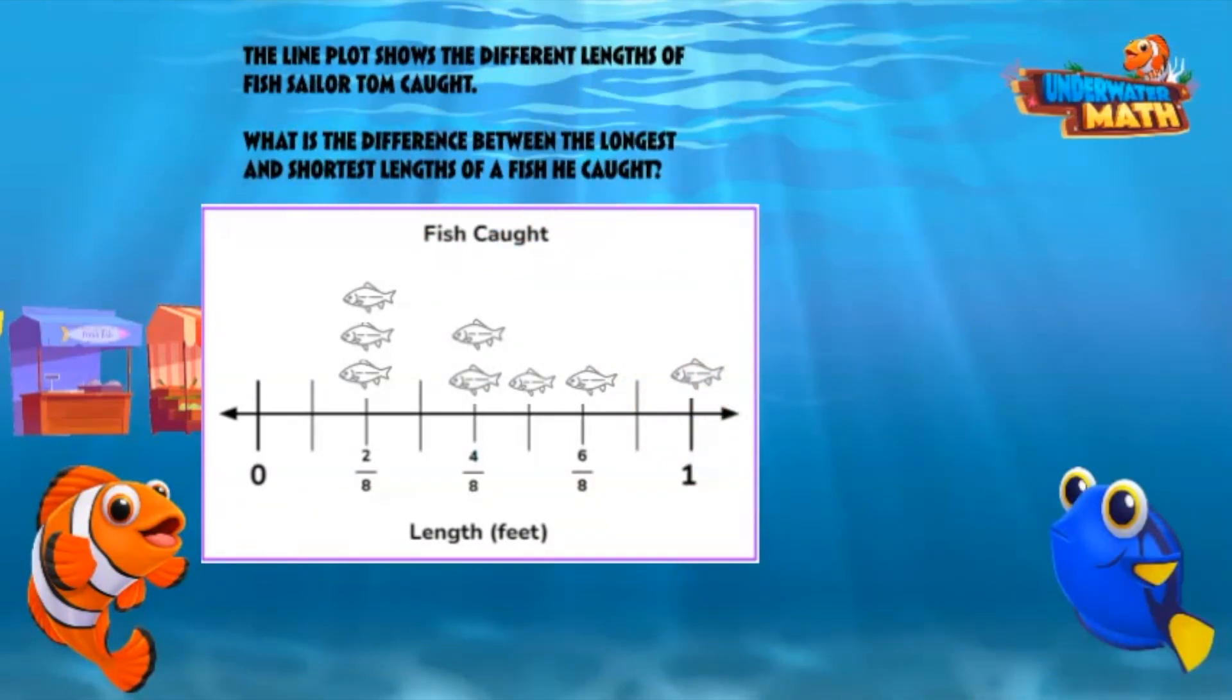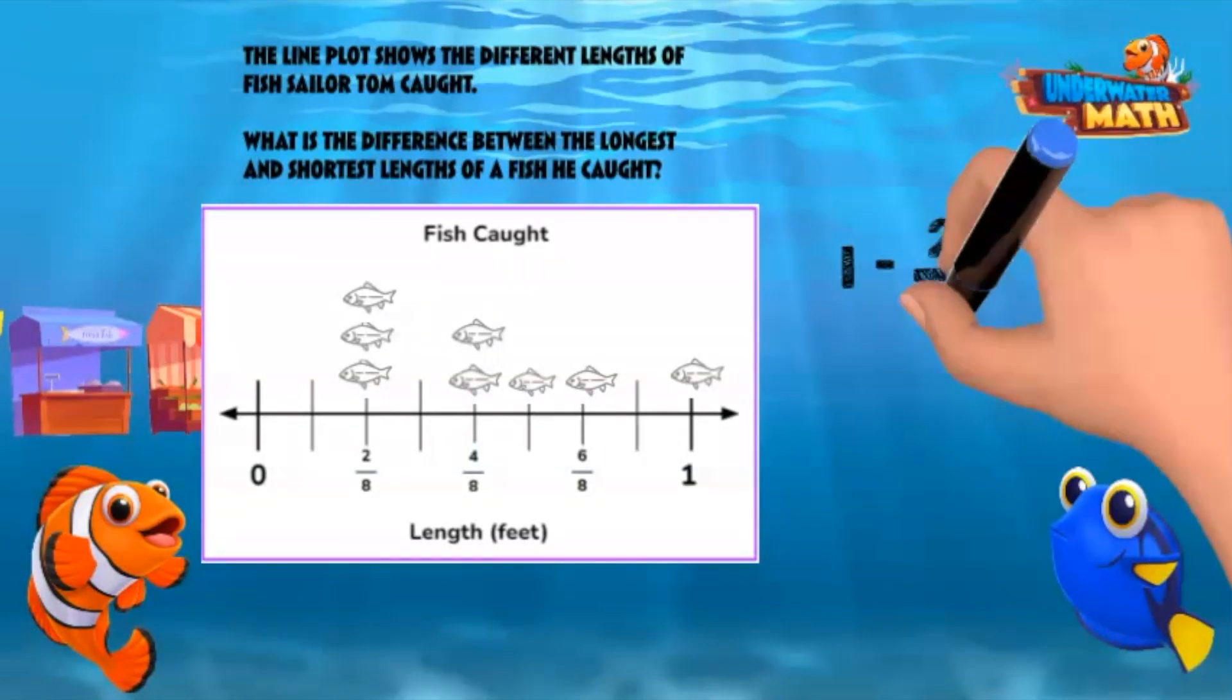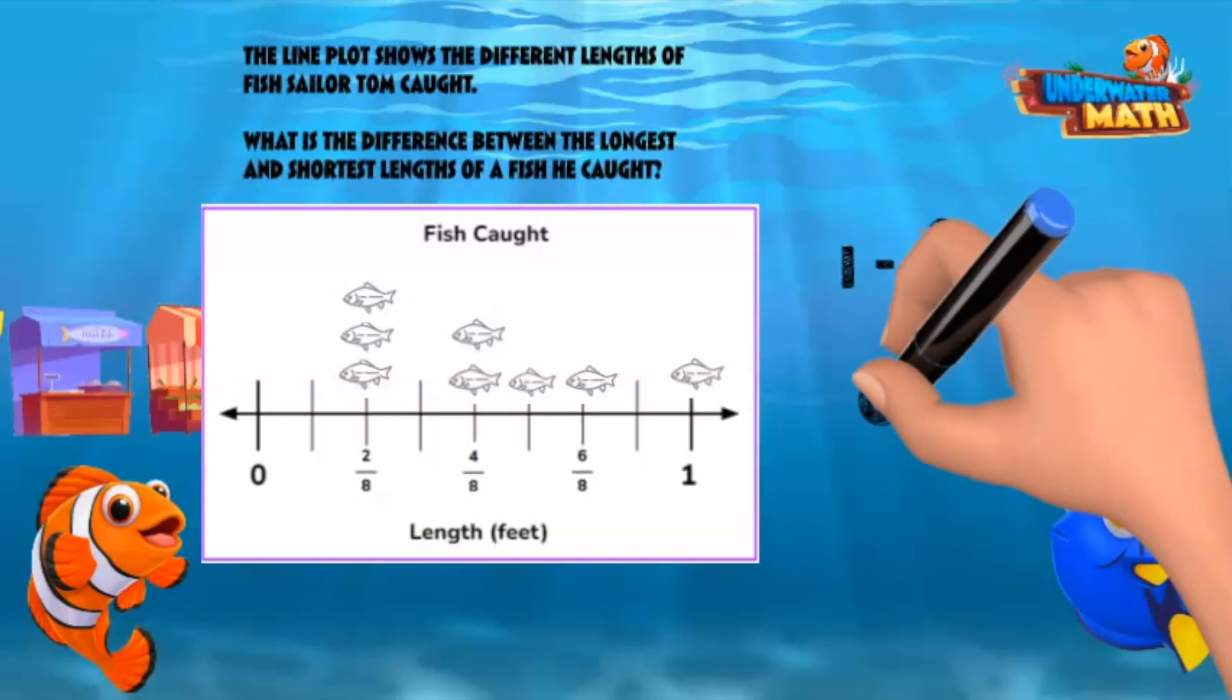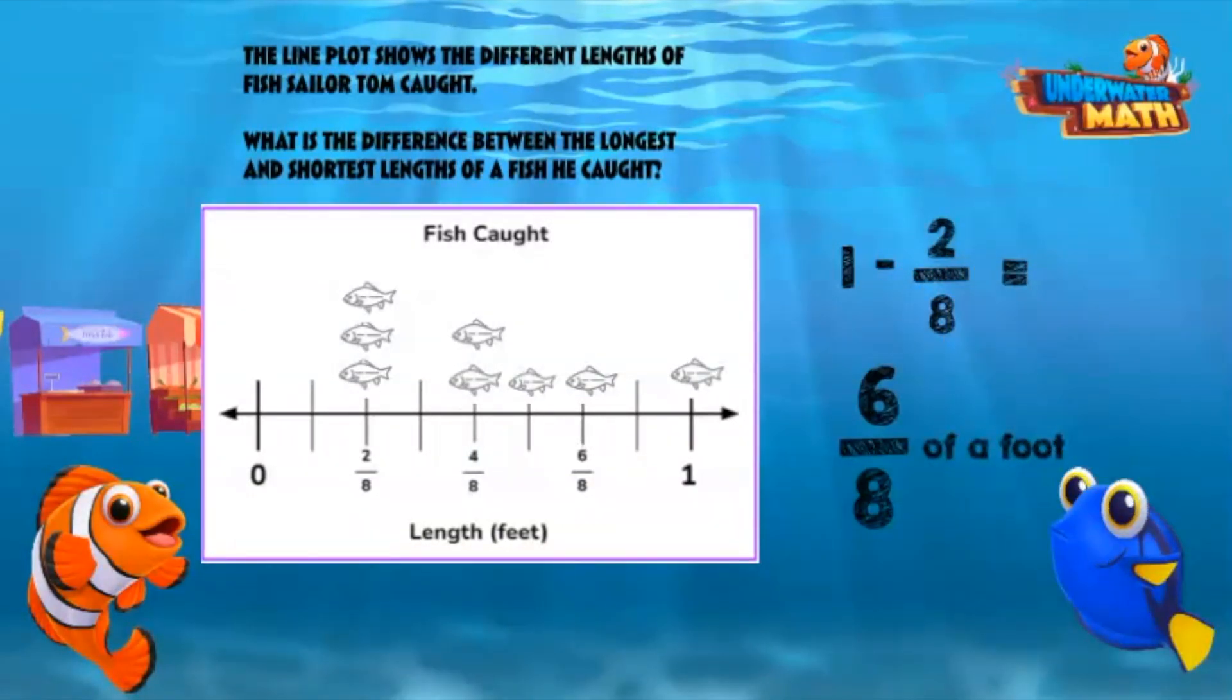This customer wants to know, what is the difference between the longest and shortest lengths of fish he caught? Let's see, the longest fish is one foot and the shortest fish is two-eighths of a foot. To find the difference we will subtract two-eighths from one foot, which is six-eighths. The difference between the longest and shortest fish is six-eighths of a foot.